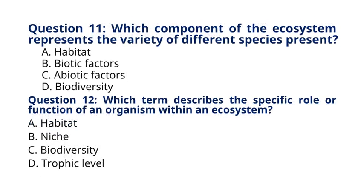Question 11. Which component of the ecosystem represents the variety of different species present? A. Habitat. B. Biotic factors. C. Abiotic factors. D. Biodiversity. The correct answer to question 11 is option D, Biodiversity. Explanation: Biodiversity refers to the variety of different species of plants, animals, and microorganisms present in an ecosystem.